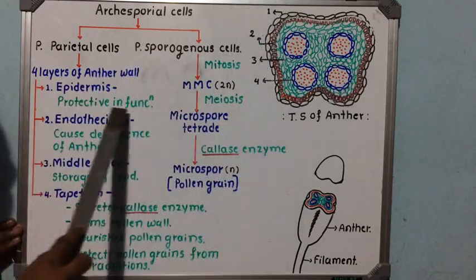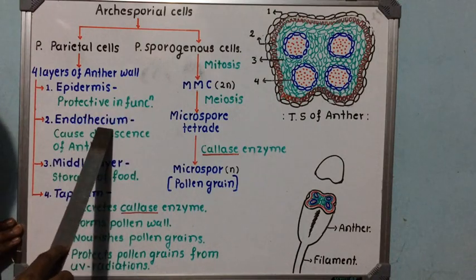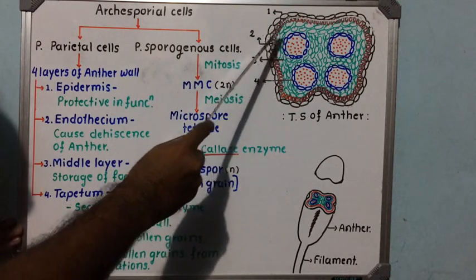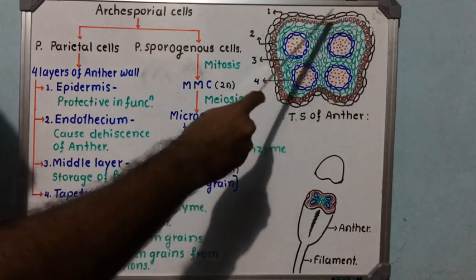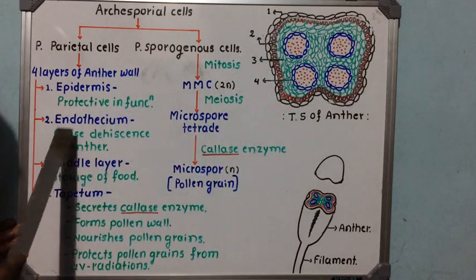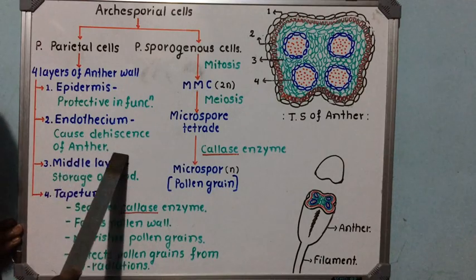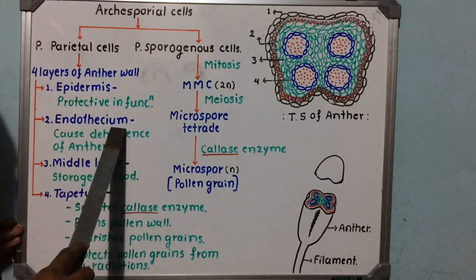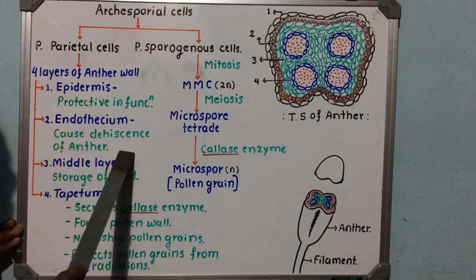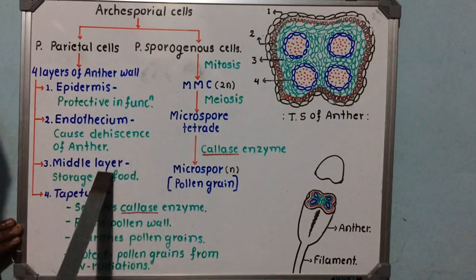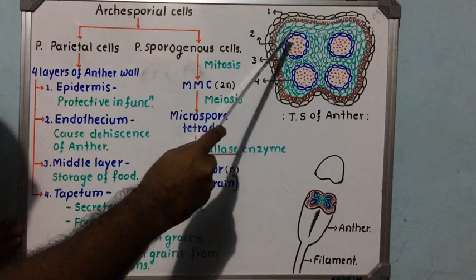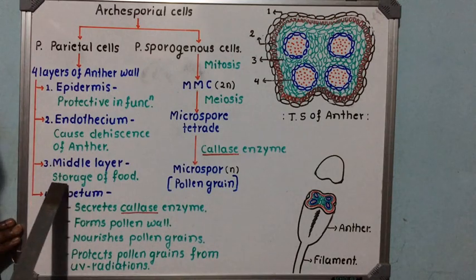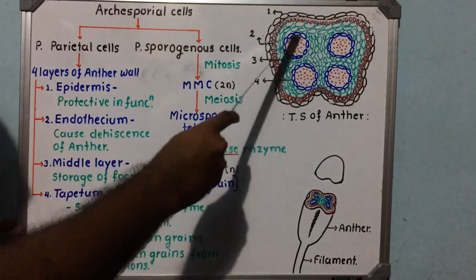The endothecium is the layer just internal to the epidermis, made up of a single layer of radially arranged cells. Its main function is to help in the opening of the anther to release pollen grains — the word dehiscence means opening, so endothecium causes dehiscence of the anther. The middle layer is present between the endothecium and tapetum, made up of several layers of cells, and its main function is storage of food.